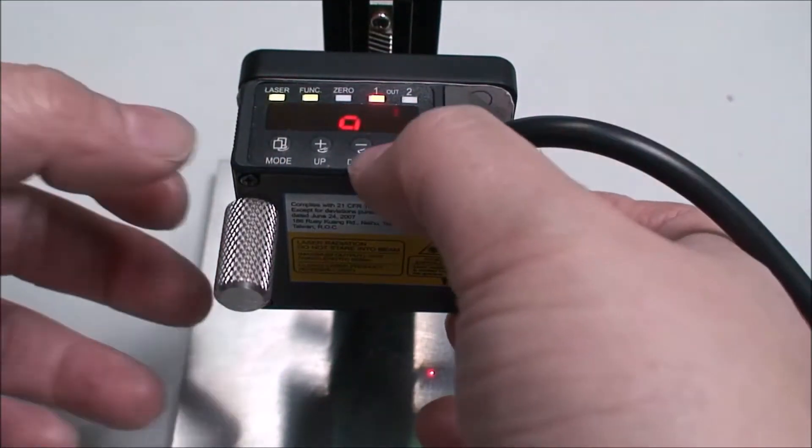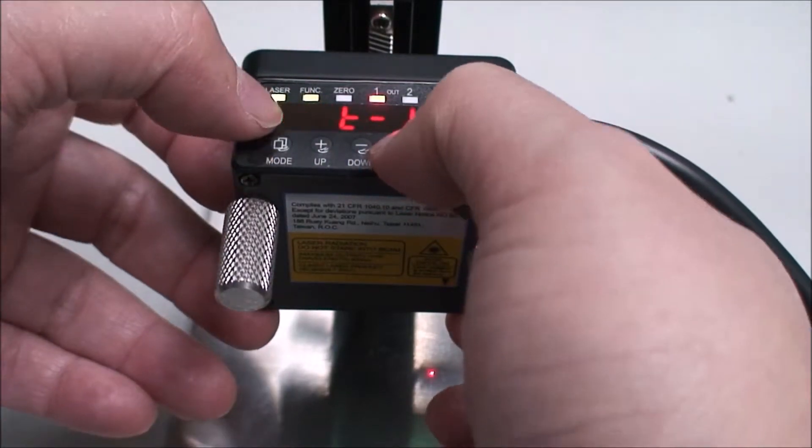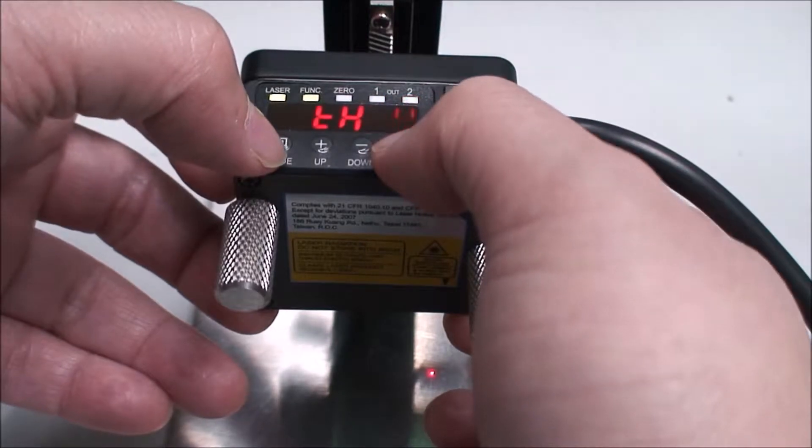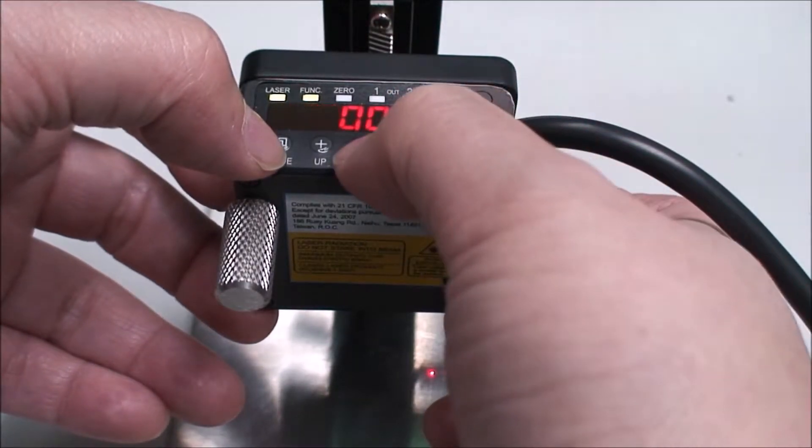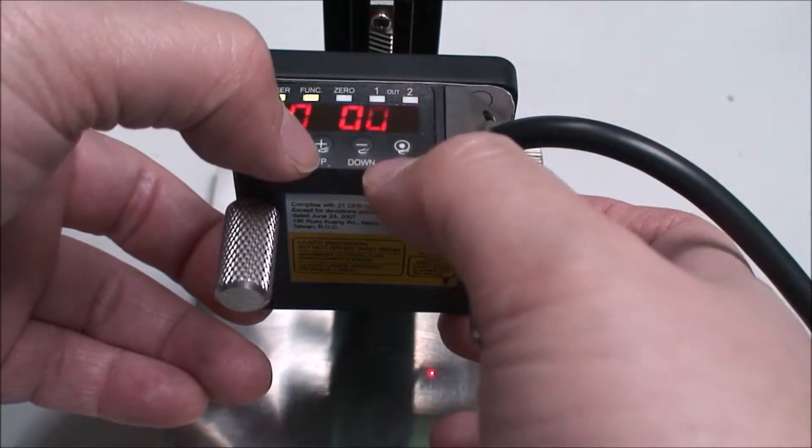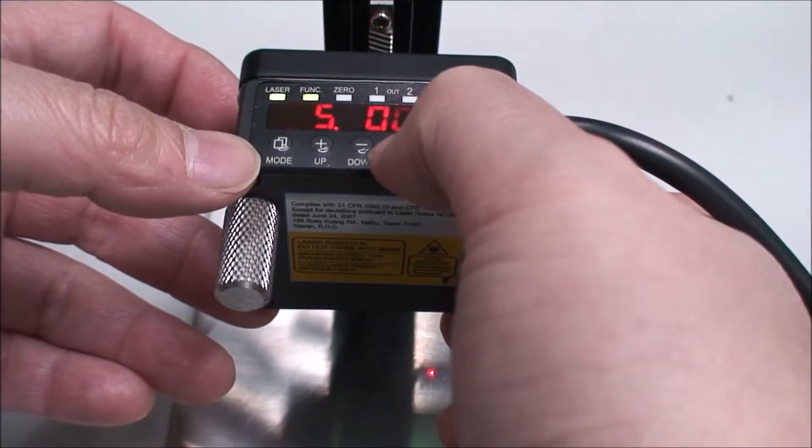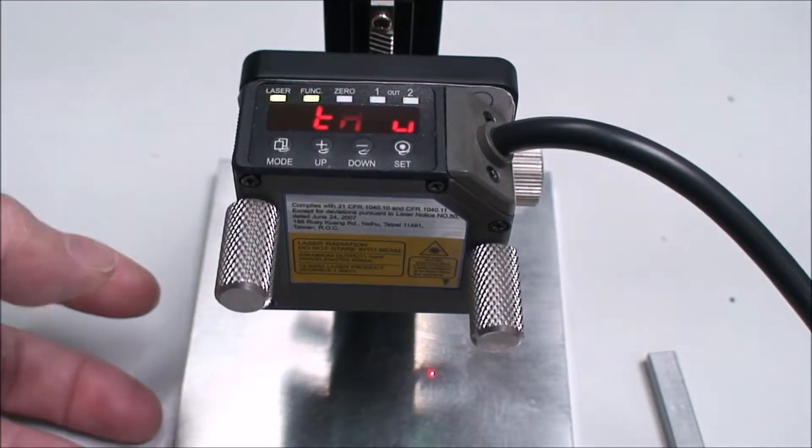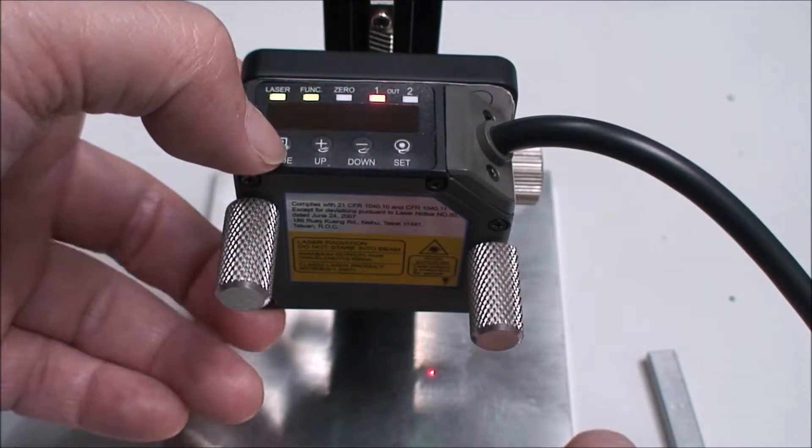Then go back to the menu in R2. We need to set up the threshold value. For example, we set up 5 millimeters. Then press the setup key. The data will store back to the sensor.